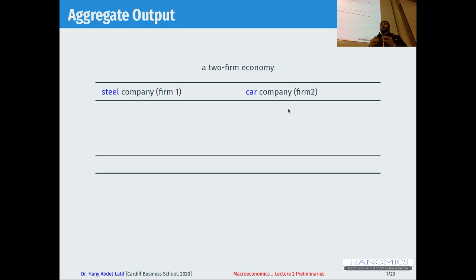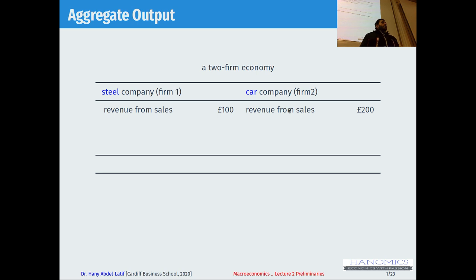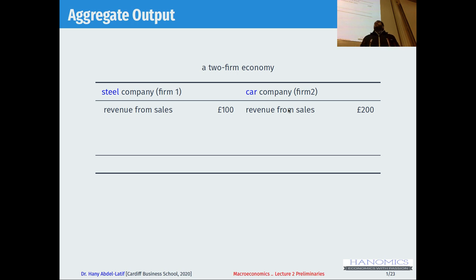Let's assume there is a country in which there are only two firms — firm one and firm two. Firm one produces steel, firm two produces cars. The sales for firm one is £100, while the sales for firm two is £200. We're trying to see, if this is what we produce in this economy, how we're going to calculate the gross domestic product or the aggregate output in this country.